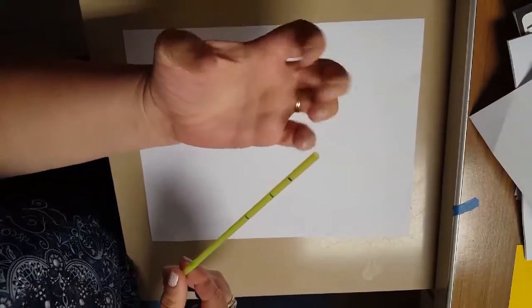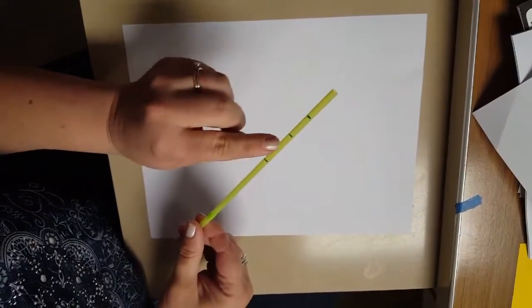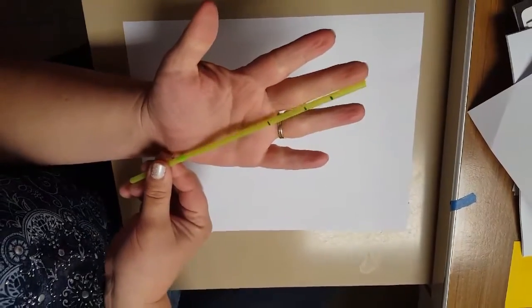These straws are going to become the fingers for our hands, so what we've marked here are the finger joints. This is the middle finger, I think.